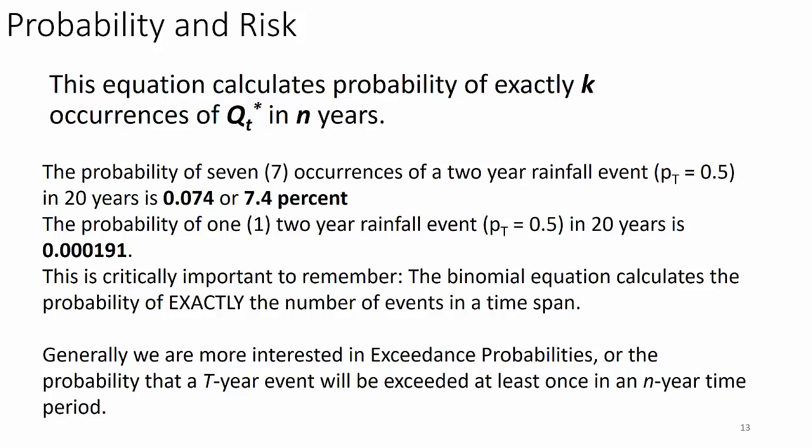The probability of only one two-year rainfall event occurring in 20 years is 0.000191 — which seems odd, because you'd expect at least one to be very likely. But this is the probability of exactly one event in 20 years, which is actually very rare. Understand what this probability is telling us: it's the exact probability of the exact number of events of a specified magnitude in a specified period of time. The binomial equation calculates the probability of the precise number of events in a time span.